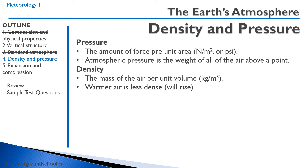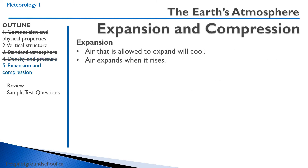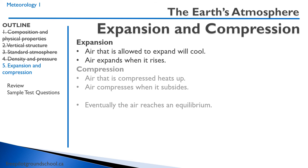Warmer air is less dense than cold air and therefore will rise. This topic — that of atmospheric expansion and compression — will come up frequently in your meteorology lessons, especially when we talk about unstable air. When air is allowed to expand, it will cool, and air expands when it rises. Conversely, air that is compressed heats up, and air compresses when it subsides or moves down. Eventually the air reaches equilibrium at a certain point, which will become evident when we're discussing stability of the air and thunderstorms.